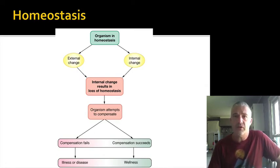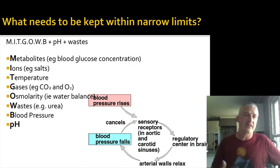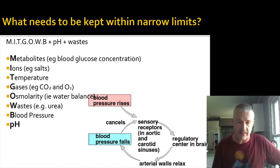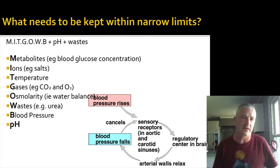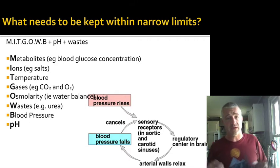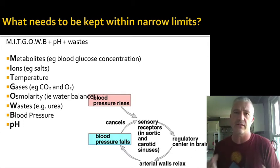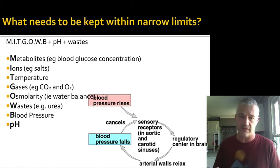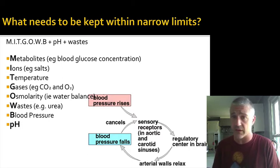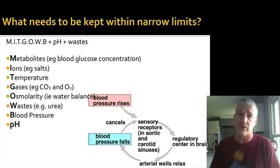There are thousands of variables we need to keep within range — metabolites, ions, temperature (which we'll focus on more deeply), gases like when we talk about altitude adaptations, waste products, blood pressure, and more. Usually a negative feedback loop is working to try to bring things back into range. Either the body compensates and maintains normal functioning, or it's unable to compensate and we have an issue.